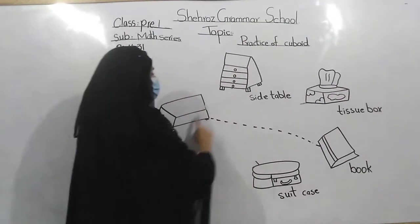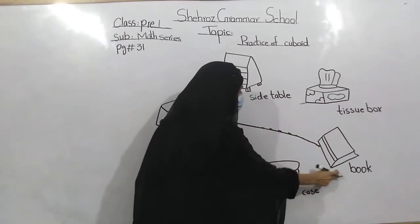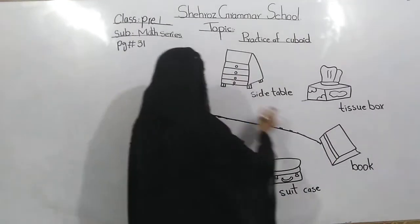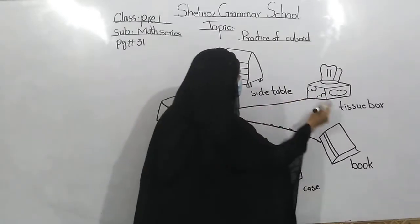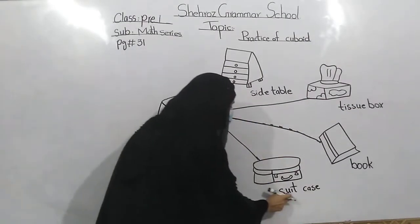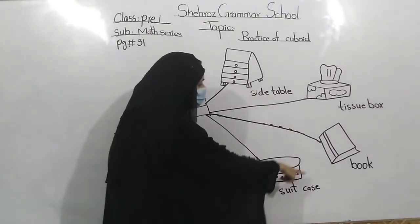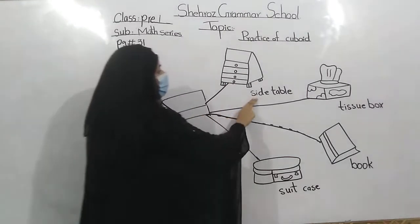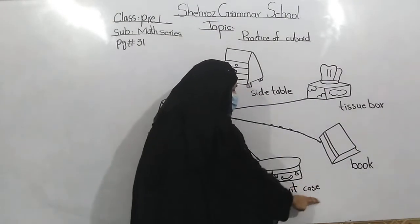We will match cuboid with cuboid shapes. Book — because this is a cuboid shape. Side table, tissue box, suitcase. We will match cuboid with cuboid shapes: side table, tissue box, book, and suitcase.